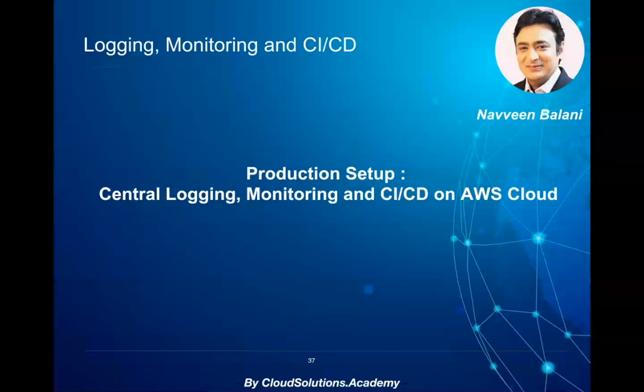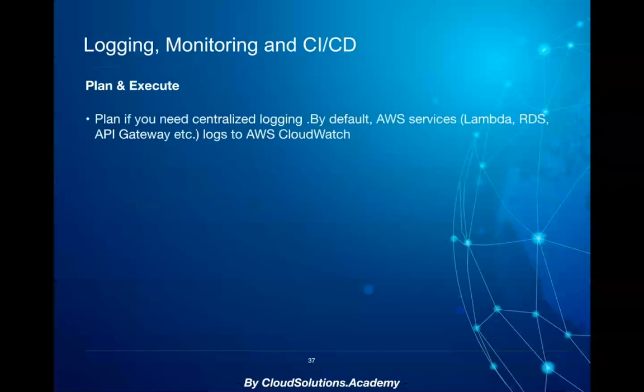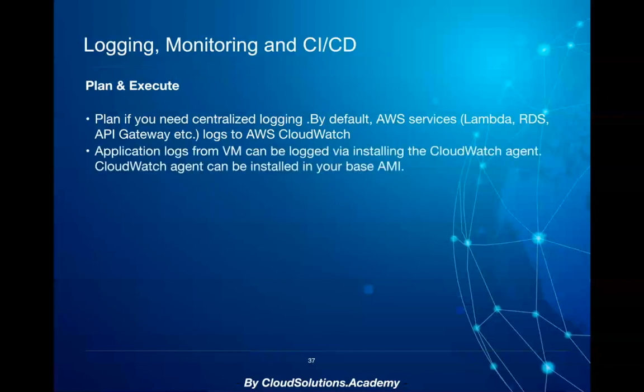Now with the production app up and running, next steps are to ensure you have enough visibility on the production environment — for instance, ensuring all logs are being captured and you can search for required events and errors. If you need to capture all logs centrally to AWS CloudWatch, make sure you capture and send the logs from virtual machines or services which don't log by default to AWS CloudWatch.